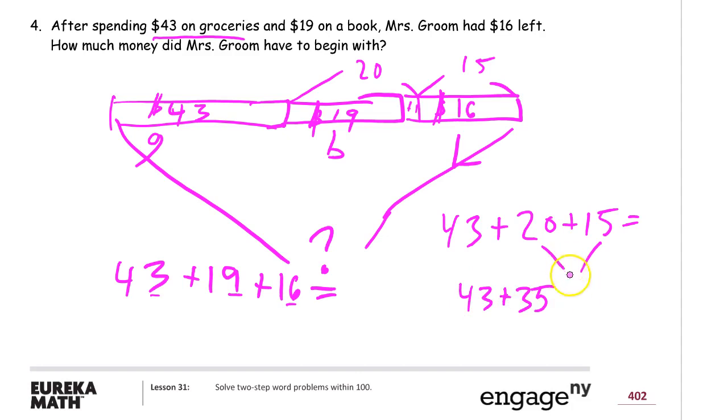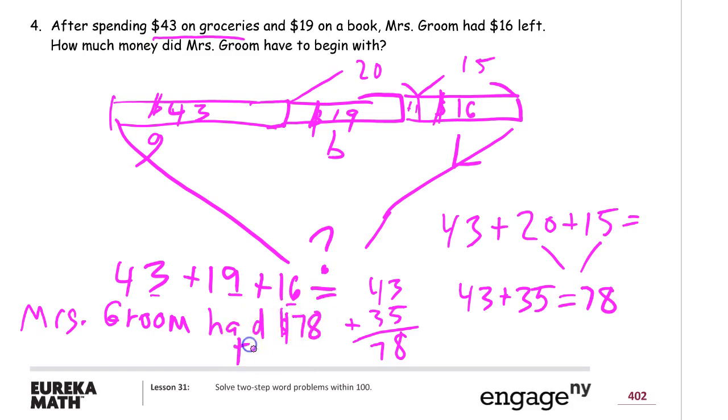And I could just look at the digits here. Or I could put it, make it vertical. $3 plus $5, $8. $4 plus $3, $7. No bundling necessary. Mrs. Groom had $78 to start with.